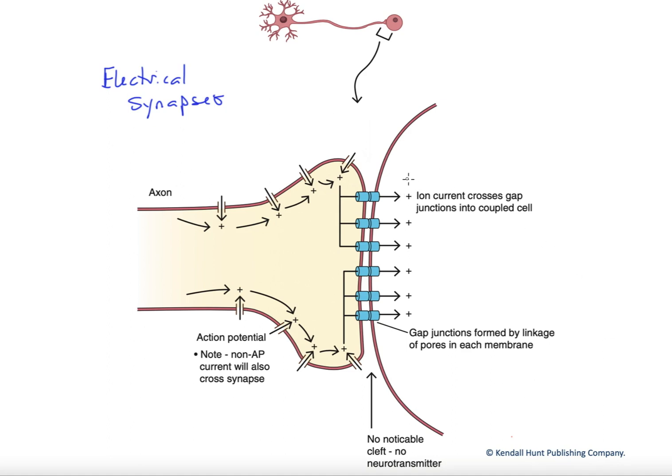And so they're formed by what are called gap junctions. Those are these blue things here. And gap junctions are essentially formed by two pores, a pore in each adjacent cell, and those pores dock to form the collective gap junction between them. And what it essentially does is it connects the cytoplasm of those two cells, allowing ions, and therefore current flow, to occur from one cell to the other.